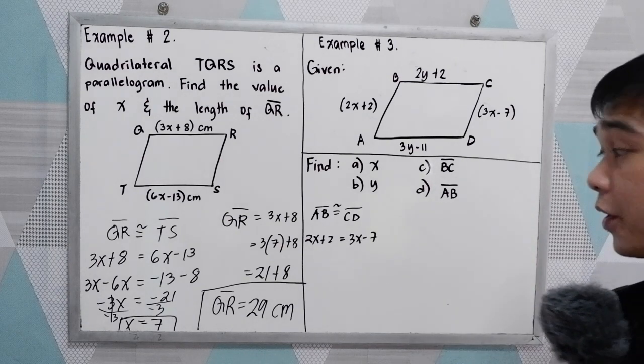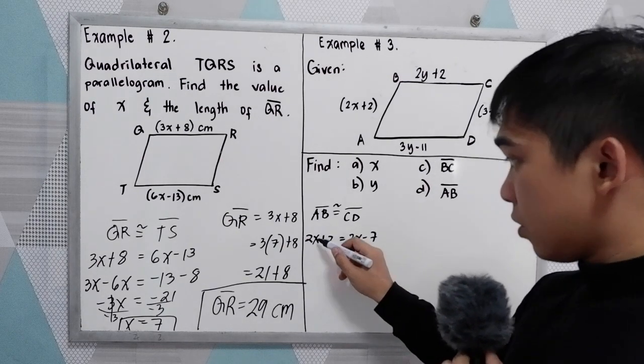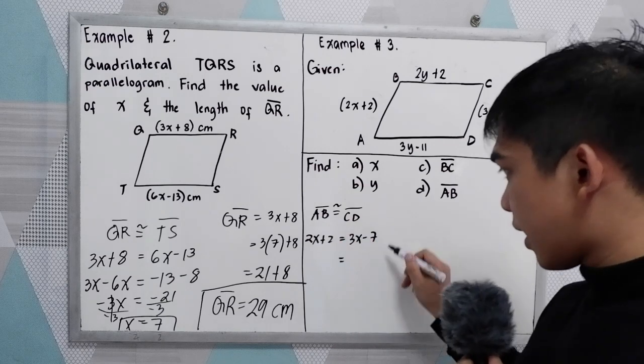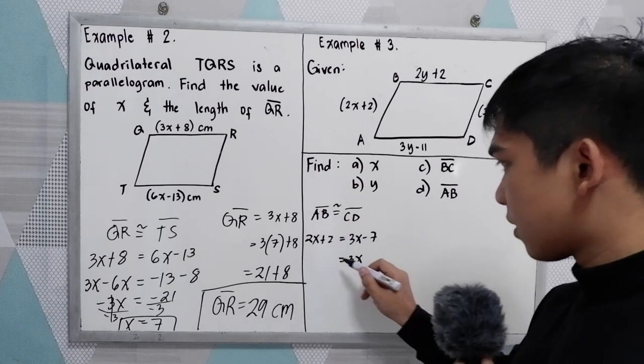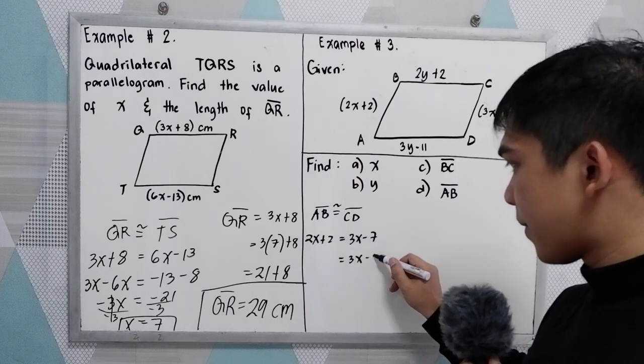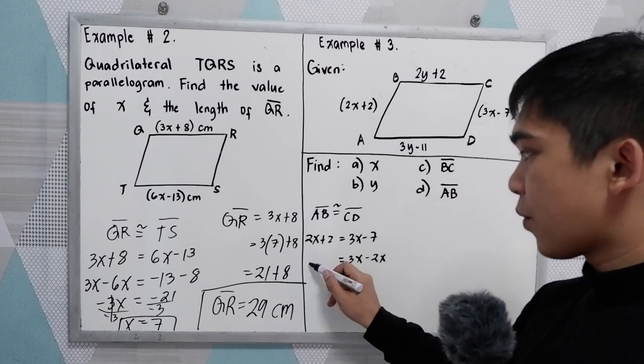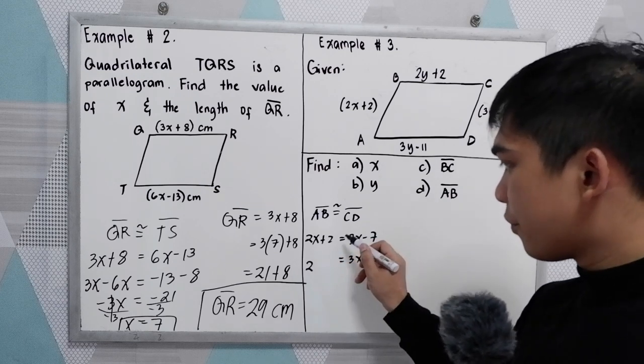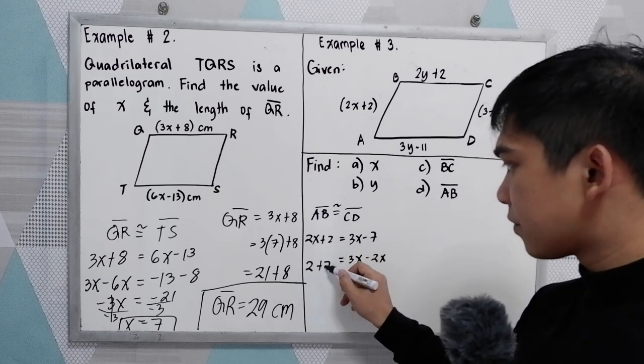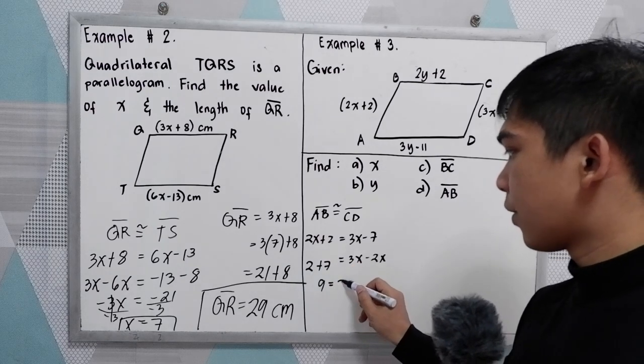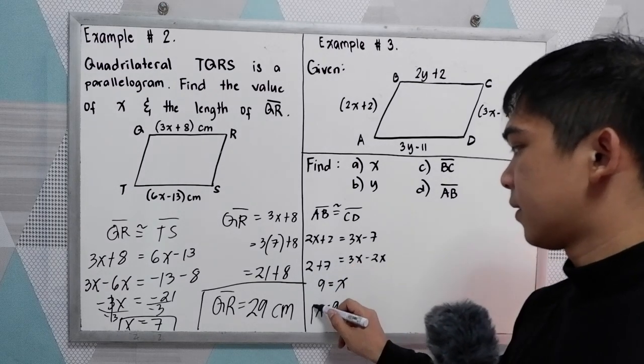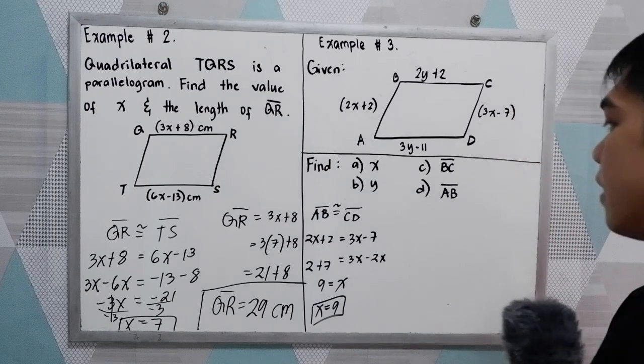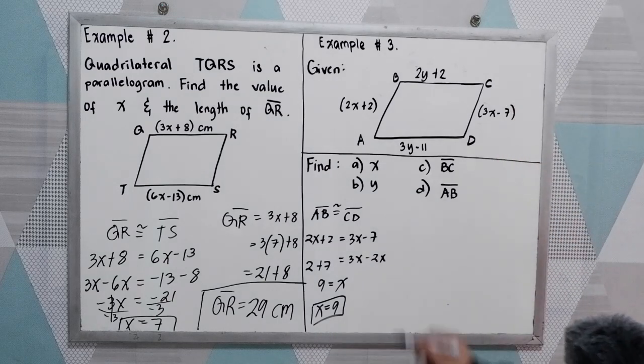Now solve for x. So if you want to move positive 2x to the left, so copy 3x. Move positive 2x, that will become negative 2x. Now we have copy 2, move negative 7, that will become positive 7. So 9 is equal to x, or x is equal to 9. Now we have the value for x which is 9. Now solve for y.